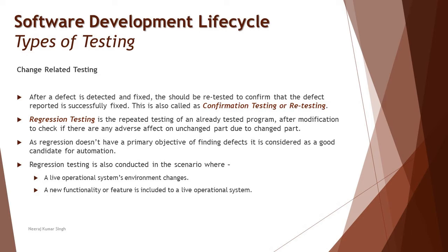When you go back to the service center and the agent says your phone is ready, the very first thing you naturally do is play a song to confirm you can hear the music. This is exactly what we call retesting. Technically, when you have a test case that you executed and it failed — resulting in a defect — the developer makes a modification to fix it. When it comes back to you, you rerun the same test case to confirm whether the issue is fixed. That is retesting.